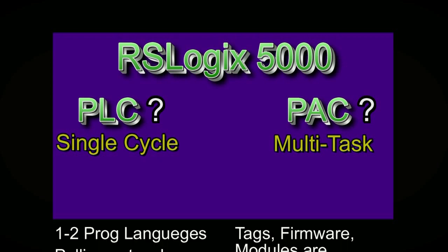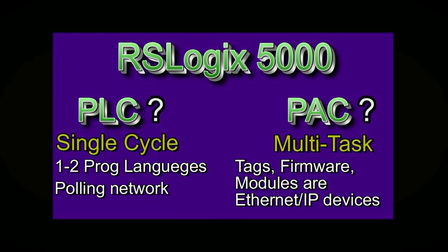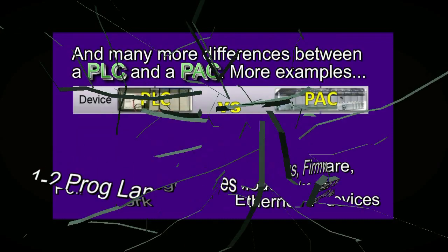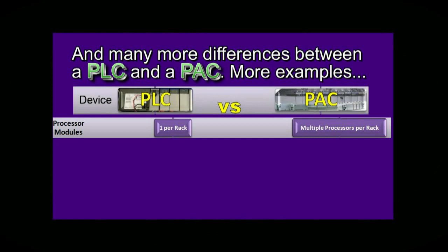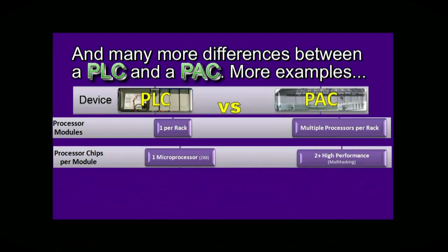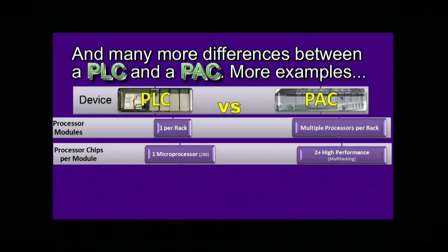A PAC has additional differences to the PLC too, like motion control, tags, firmware, etc. There are many more differences, some of which are listed here. A PLC can only have one processor module in the first slot, whereas a PAC can have multiple modules in any slot, as they are just Ethernet devices on a network.